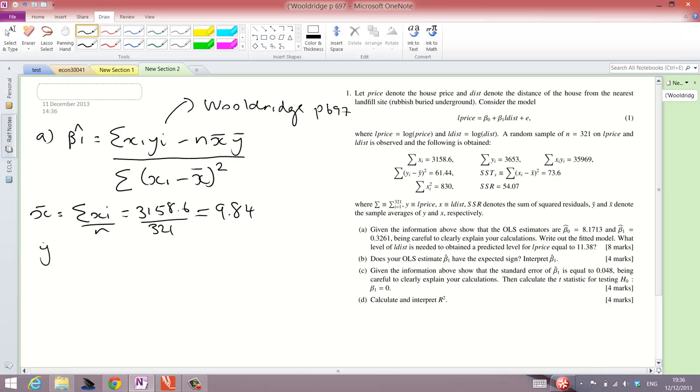And we do the same for y. 3653 over 321 is equal to roughly 11.38. We can't do these calculations roughly. Obviously in the exam, I would expect you to do them accurately to some decimal places. So we have the means there, and now we're looking to put them into the formula.